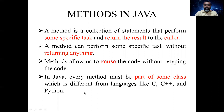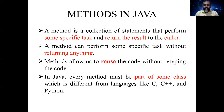In Java, every method must be part of some class, which is different from languages like C, C++, and Python. In Java, all methods will be available inside a class — they belong to a class and are not written separately outside the class. In C++ we can write a method separately outside the class.